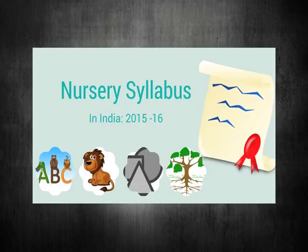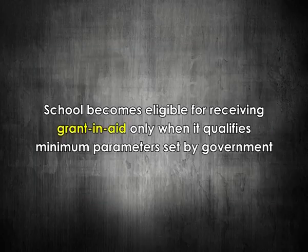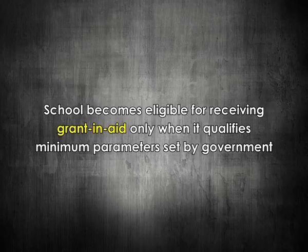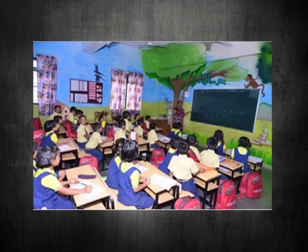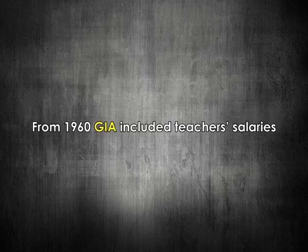These schools need to operate according to the GIA code, which may include timely inspection of schools by government authorities, regular parent-teacher meets, checks on prescribed syllabus for students, and monitoring of proposed salaries of teachers. A school becomes eligible for receiving grant-in-aid only when it qualifies the minimum parameters set by government, and for that purpose it has to run on its own with the requisite infrastructure and teaching facilities for the prescribed period.